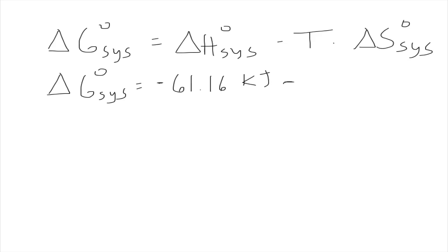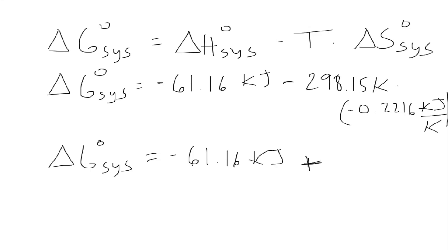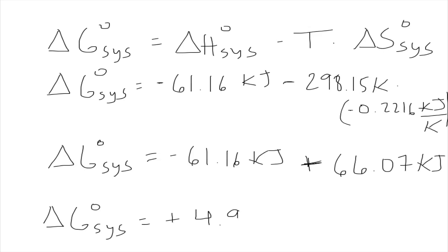Now we plug into the Gibbs free energy formula: Delta G equals Delta H minus T times Delta S. That is negative 61.16 kilojoules, minus 298.15 Kelvin times negative 0.2216 kilojoules per Kelvin. Because of the two negative signs, the second term becomes plus 66.07 kilojoules. So Delta G equals negative 61.16 plus 66.07, which gives a Delta G equal to positive 4.9 kilojoules.